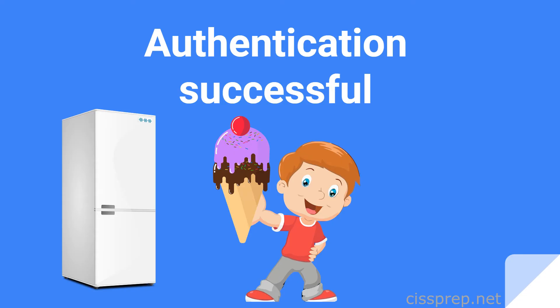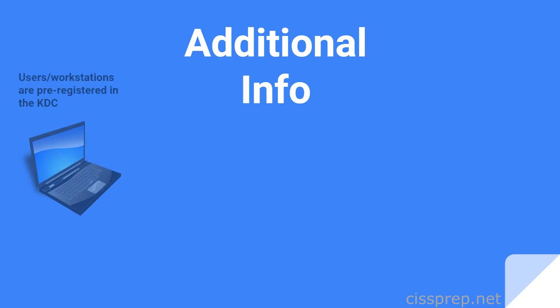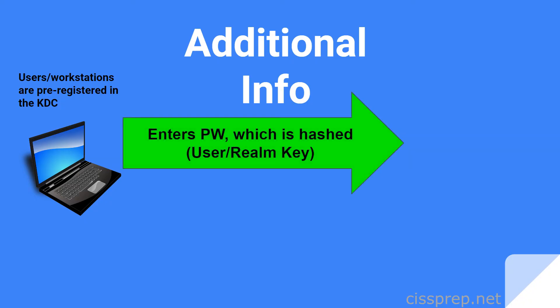The next part of this video will focus on additional bits of information you'll need only if you're studying for the CISSP exam, but feel free to stick around if you're also looking for more information on the topic. The first tidbit to know is that users and workstations are pre-registered in the key distribution center with a secret key. The secret key is typically a hash of the password, which will be changed when the user first authenticates and changes their password. The key is referred to as the unique user key or realm key.